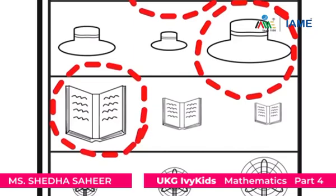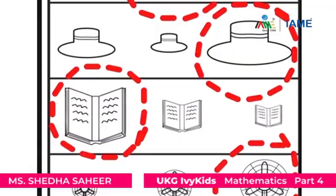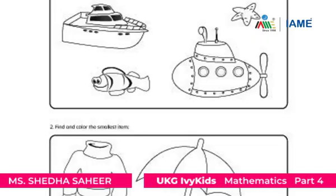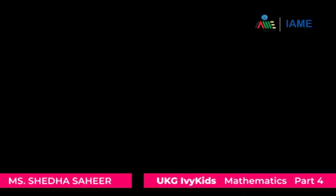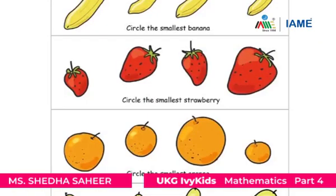Now let's find out the biggest fan — the third one is the biggest fan. Now let's find out the smallest object in the first group. The starfish is the smallest object in the first group. What about the second group? Which is the smallest object? The gloves is the smallest one.